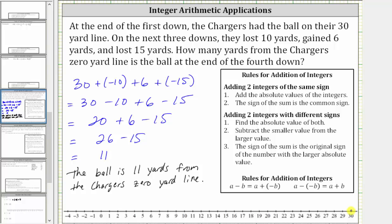Let's verify this on the number line. Beginning at positive 30, if they lost 10 yards, then they're back at the 20-yard line.